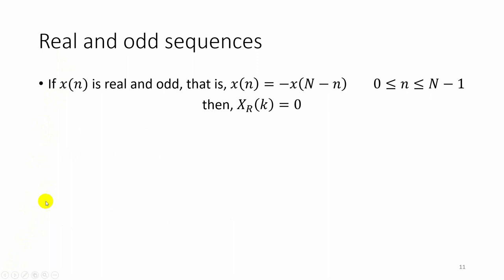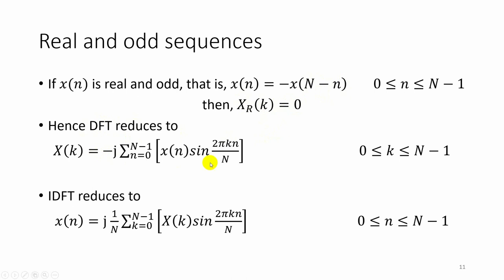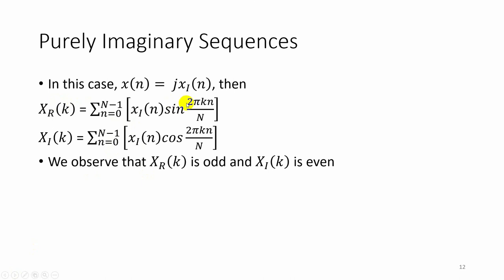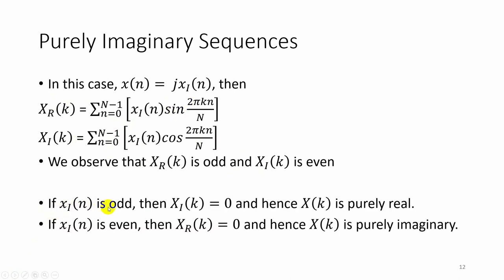If x of n is real and odd, then x of n equals minus x of capital N minus n, and Xr of k, the real part of the DFT, becomes zero. In that case the DFT reduces to only the sine term, and the IDFT also reduces to the sine term. If the sequence is purely imaginary, then x of n equals j times xi of n. In that case Xr of k equals xi of n times sin(2 pi k n / N), and Xi of k equals xi of n times cos(2 pi k n / N) divided by N, where Xr of k is odd and Xi of k is even. If xi of n is odd then its DFT Xi of k equals 0 and hence X of k is purely real. If xi of n is even then Xr of k equals 0, so the DFT X of k is purely imaginary.